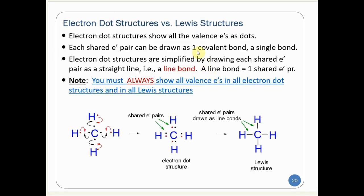Let's distinguish between electron dot structures and Lewis structures. If we show the shared pairs of electrons simply as pairs of dots, this is called an electron dot structure. It gets tedious to track all electrons this way, so we prefer line bond structures — also called Lewis structures — in which each line represents a shared pair of electrons. Note: you must always show all valence electrons in any structure. So much chemistry occurs at non-bonded electrons that we need to keep track of them. In methane there are none, but subsequent examples will have them.